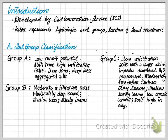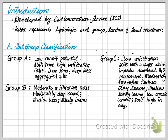Group C has slow infiltration — soils with a layer which impedes downward water movement. These include moderate fine to fine textures, clay loams, shallow sandy loams, low organic content, and soils high in clay.